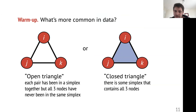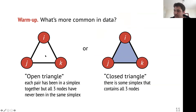Here's a warm-up question related to this research. What do you actually think is more common in data: three nodes where each pairwise interacts in some way but not all three together — an open triangle — or these filled-in closed triangles?